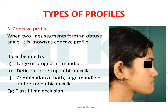A concave profile is when the two line segments form an obtuse angle. This can be due to a large or prognathic mandible, as seen in this figure, a deficient or retrognathic maxilla, or a combination of both — a large mandible and a retrognathic maxilla. A concave profile is usually seen in Class III malocclusions.